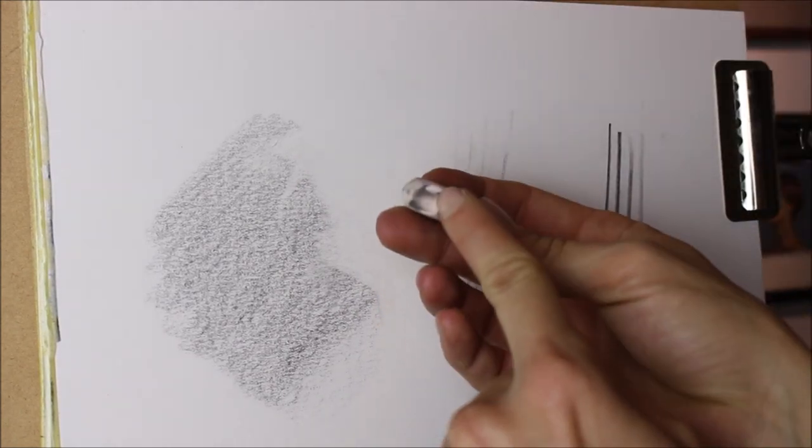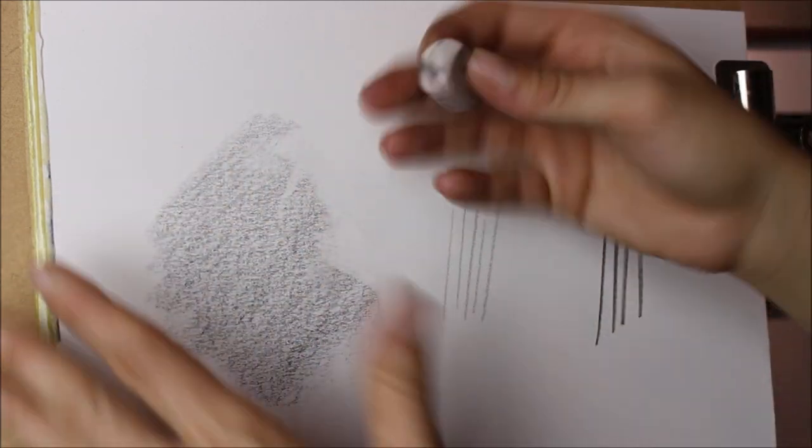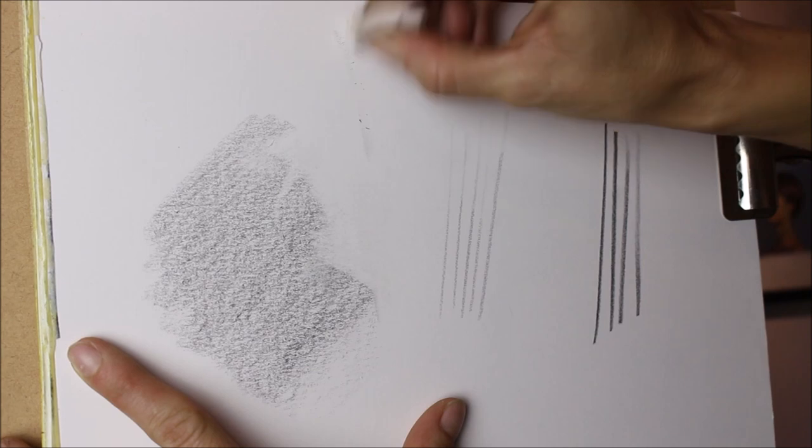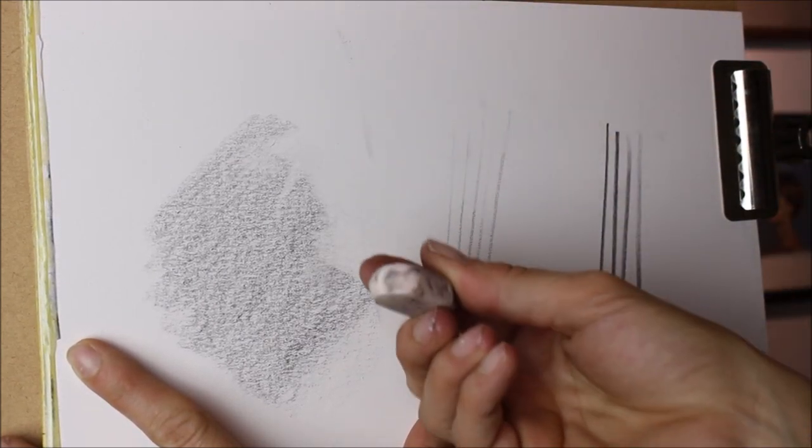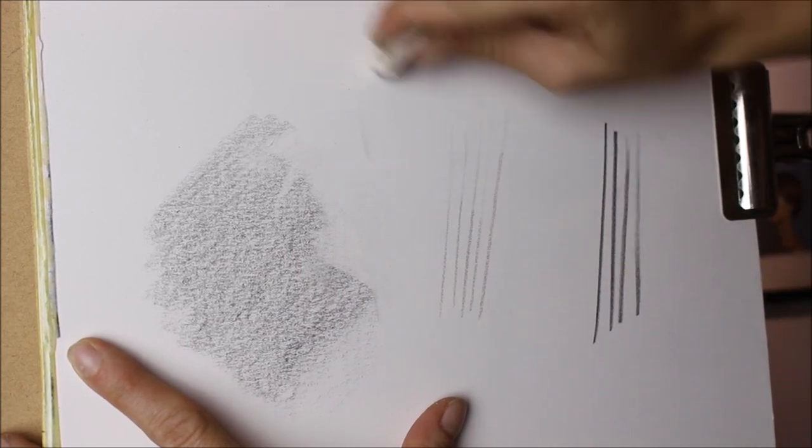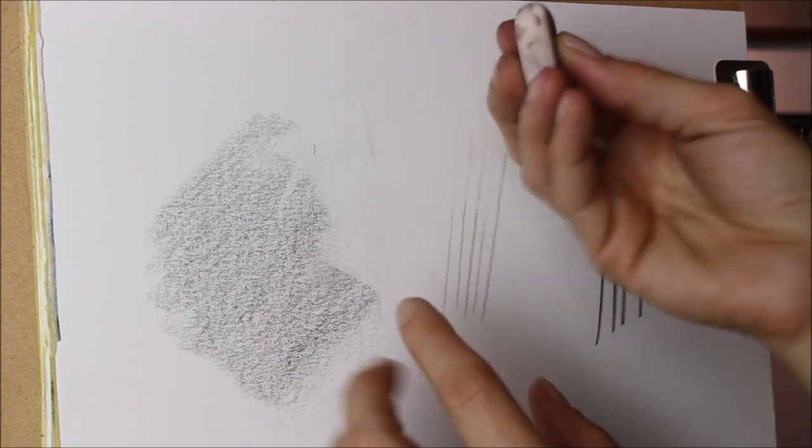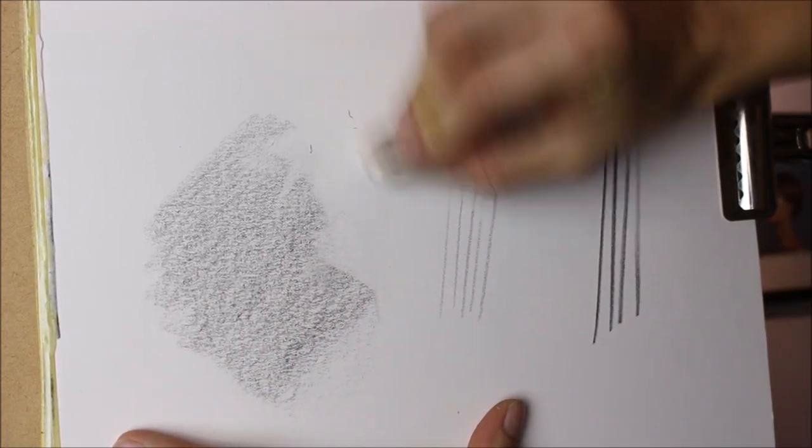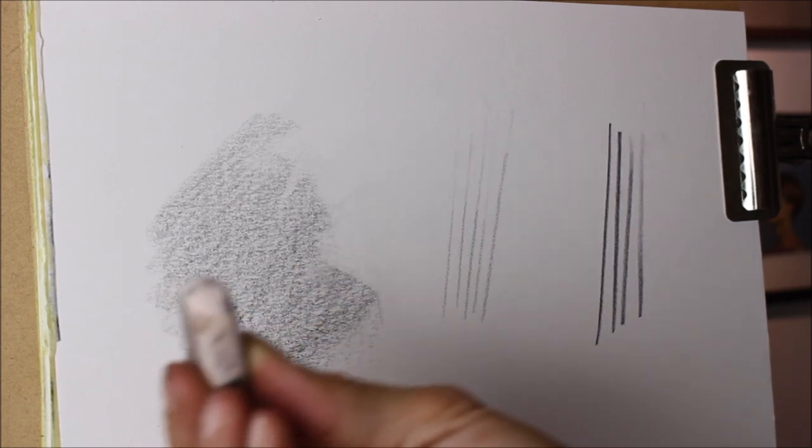Now when you get this little bit of buildup, all you need to do is come on a fresh sheet of paper and just erase it off and it comes right off. You're going to want to do that in between your drawings so that you don't wind up smearing the black. However, these white ones don't tend to smear the black nearly as badly as the pink ones do.